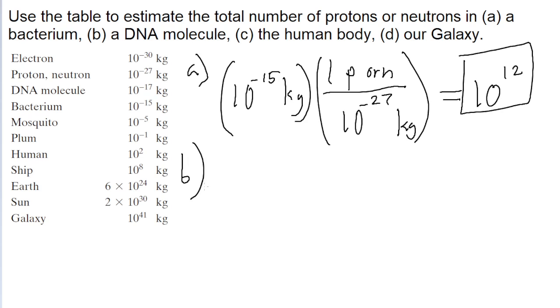Now for part B, we can see that the mass of the DNA molecule, according to our table, is 10 to the power of negative 17 kilograms.